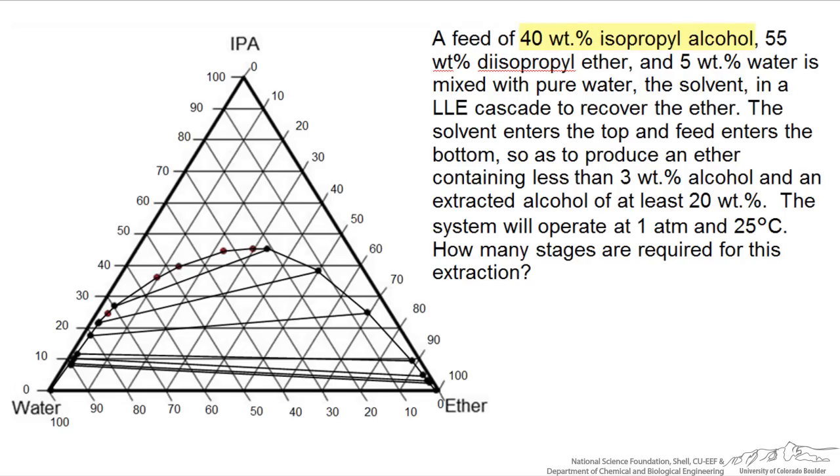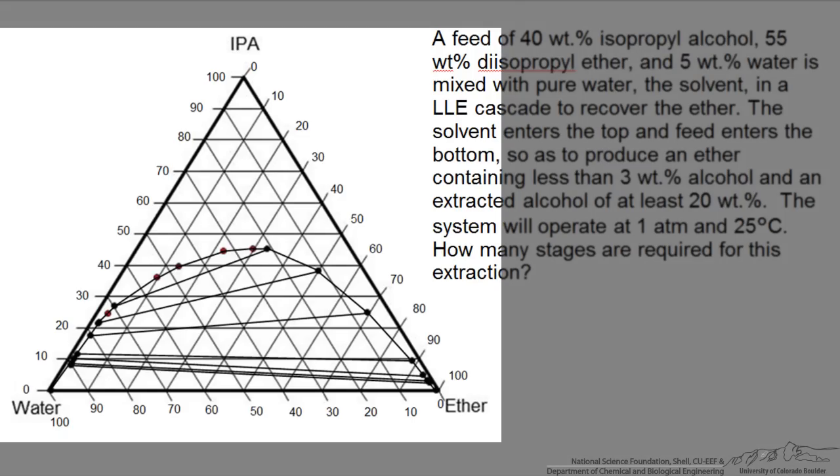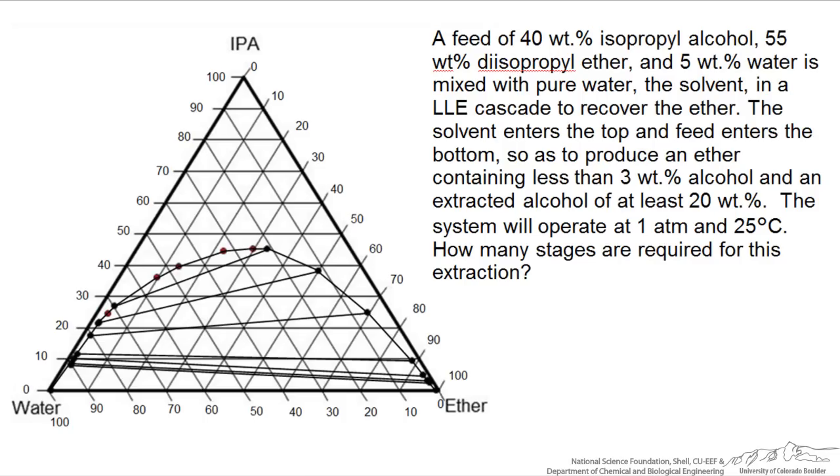Let's take a look at the following problem in which we have a feed of 40 weight percent IPA, 55 weight percent ether, and 5 weight percent water, that is mixed with pure water as the solvent to recover the ether. Now we have our phase diagram shown here as a ternary phase plot.